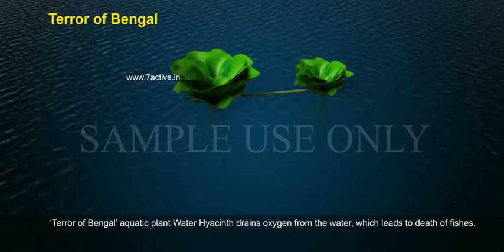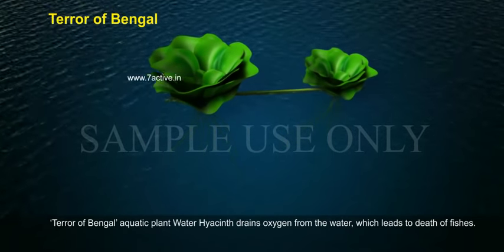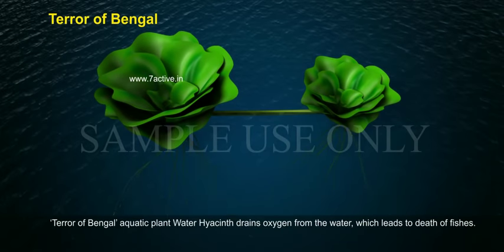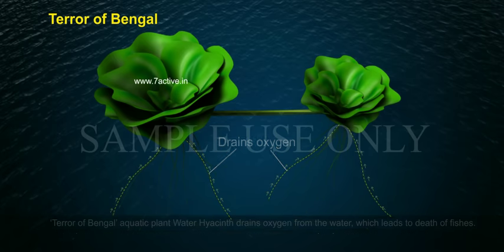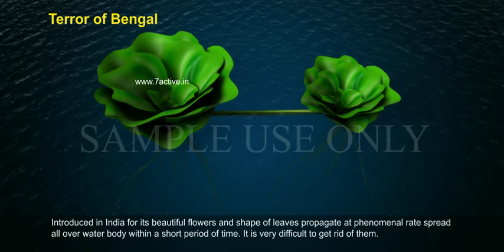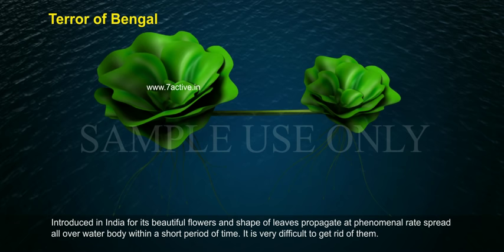The Terror of Bengal, the aquatic plant water hyacinth, drains oxygen from the water, which leads to the death of fishes. Introduced in India for its beautiful flowers and shape of leaves, it propagates at phenomenal rates and spreads all over a water body within a short period of time. It is very difficult to get rid of them.